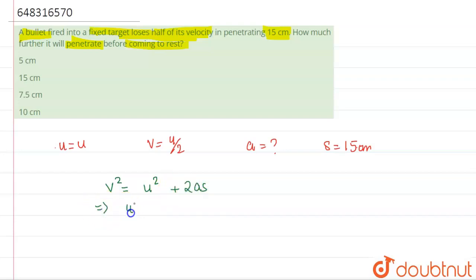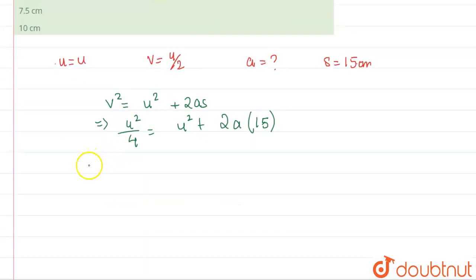v² is u²/4 = u² + 2a(15). Now we'll bring u over to this side, and this will come out as u will get subtracted from it. So this will come 3u²/4, and this will be in negative, and this will be 30a.